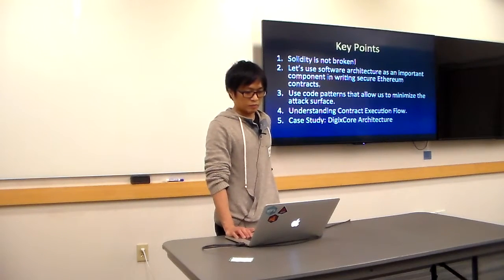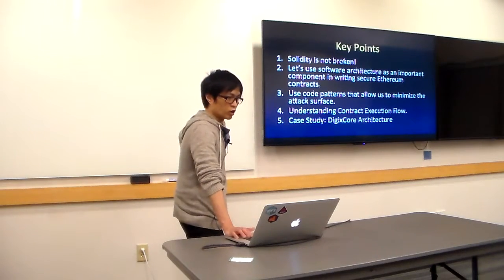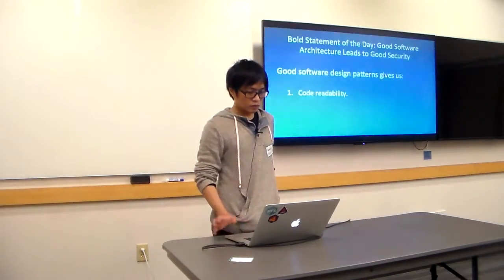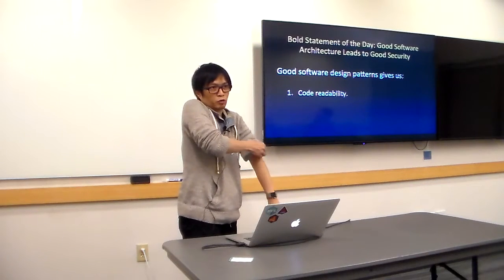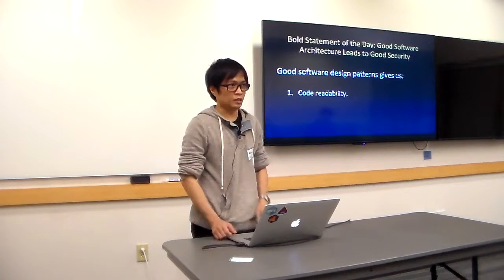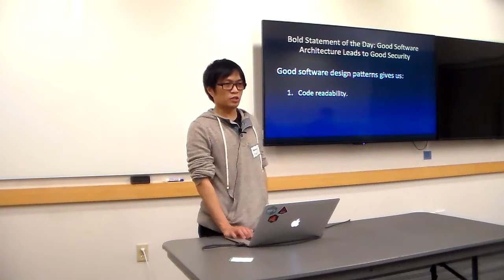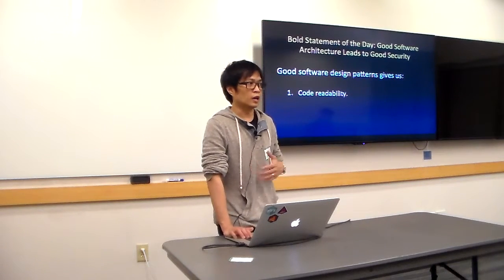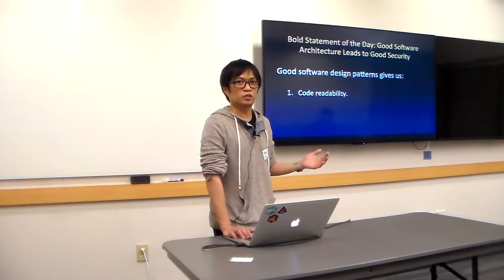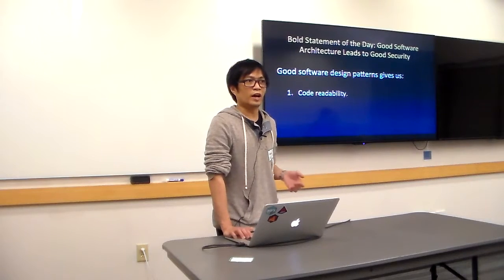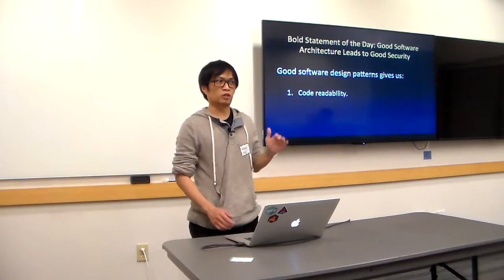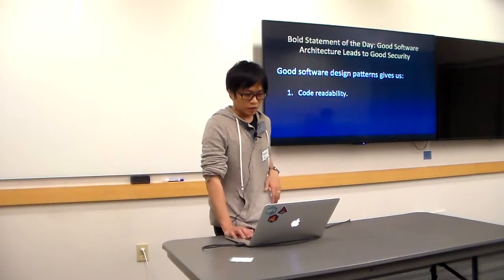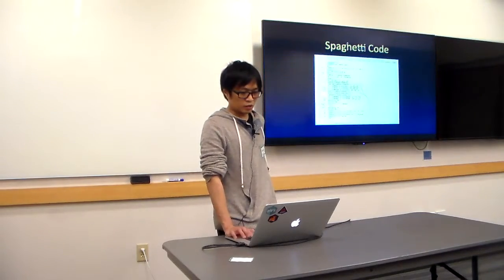I'm going to show you the contract execution flow and give an example of the DigiScore architecture and what we're trying to accomplish. Good software architecture leads to good security. Code readability is very important in writing secure software because it allows us to understand where the attack surfaces are — basically which functions are callable from external contracts or another person. As you're aware of what happened during the DAO hack, there was a function that was exposed that allowed a recursive call, which affects the flow of execution in contracts.